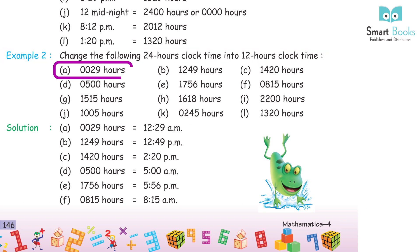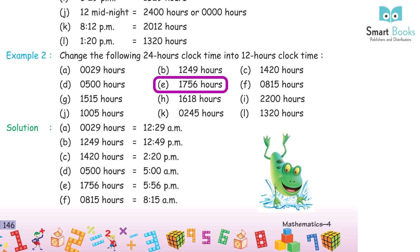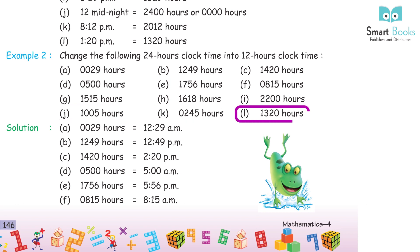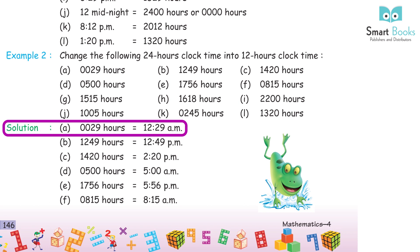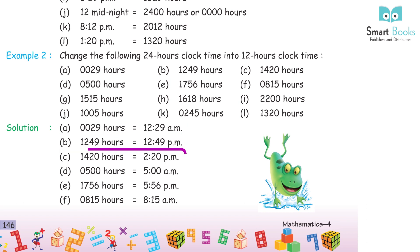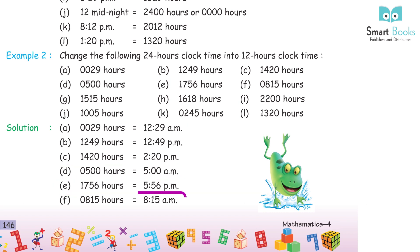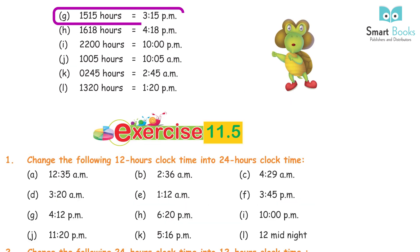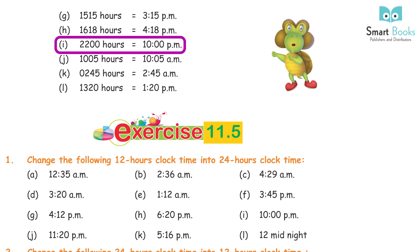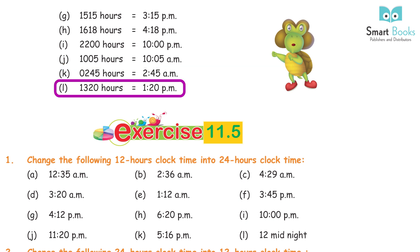Example 2: Change the following 24-hour clock time into 12-hour clock time. A. 0029 hours = 12:29 AM. B. 12:49 hours = 12:49 PM. C. 14:20 hours = 2:20 PM. D. 0500 hours = 5 AM. E. 17:56 hours = 5:56 PM. F. 0815 hours = 8:15 AM. G. 15:15 hours = 3:15 PM. H. 16:18 hours = 4:18 PM. I. 2200 hours = 10 PM. J. 1005 hours = 10:05 AM. K. 0245 hours = 2:45 AM. L. 13:20 hours = 1:20 PM.